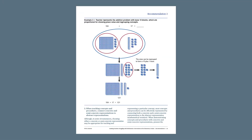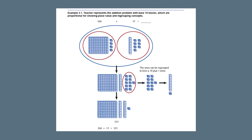Second, the three representations should be presented at the same time. That is, as students model with concrete materials, they can then draw the model they made and write the corresponding mathematical representation using numbers and symbols. For example, if students model regrouping with base 10 blocks, they should sketch the blocks and the actions they took and write the equation. By doing this, students are able to connect the representations and better understand the relationships modeled.